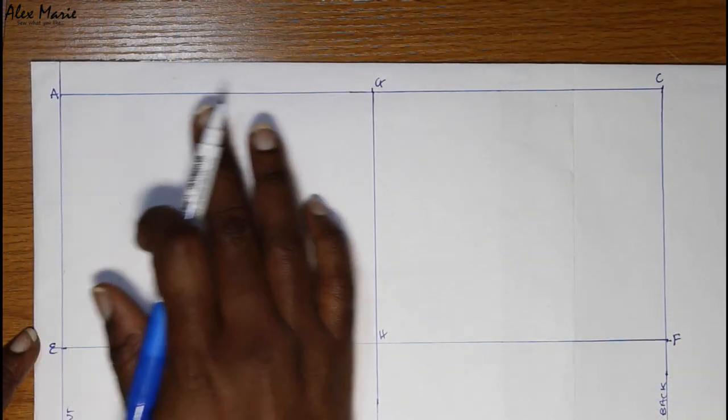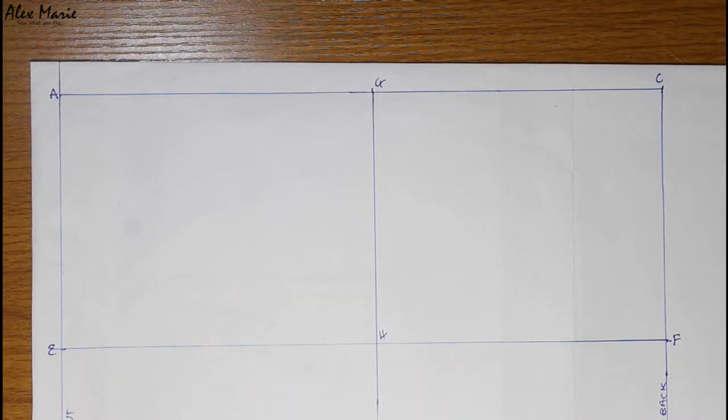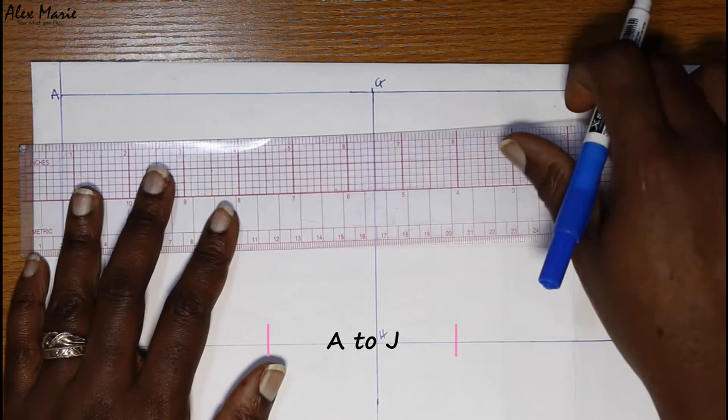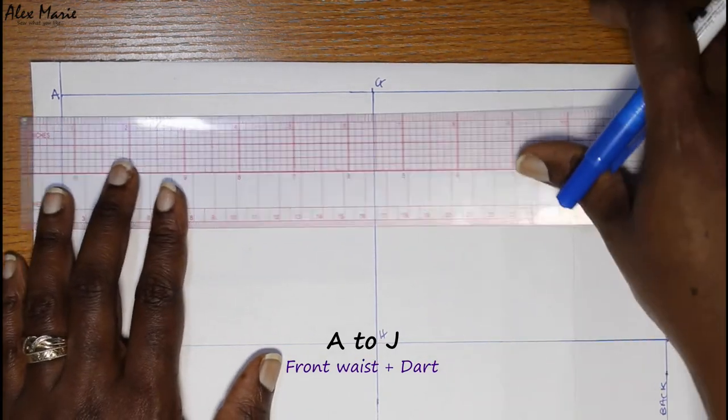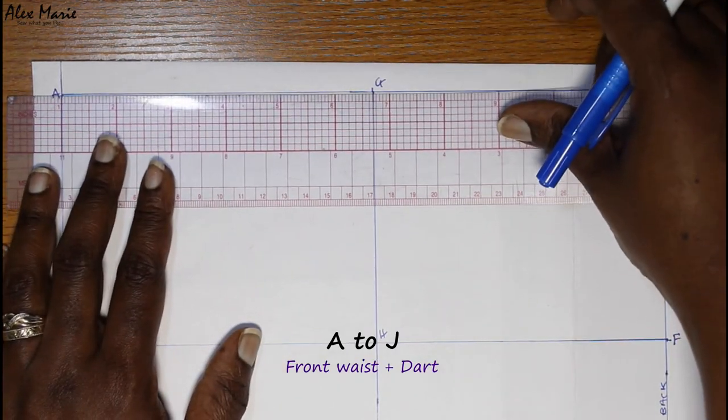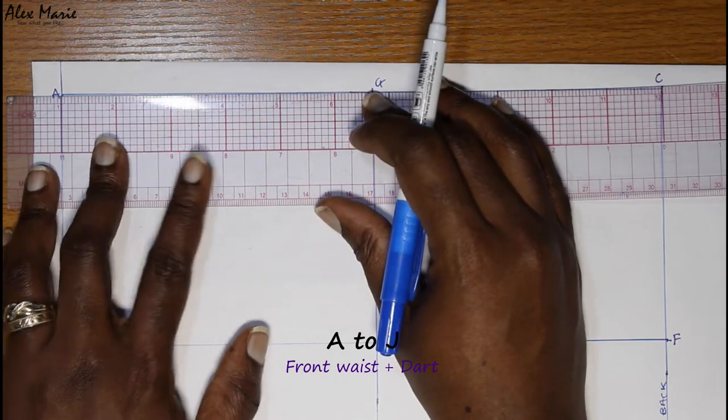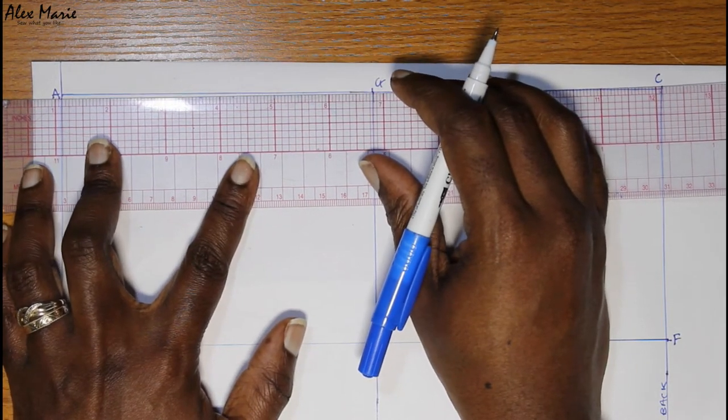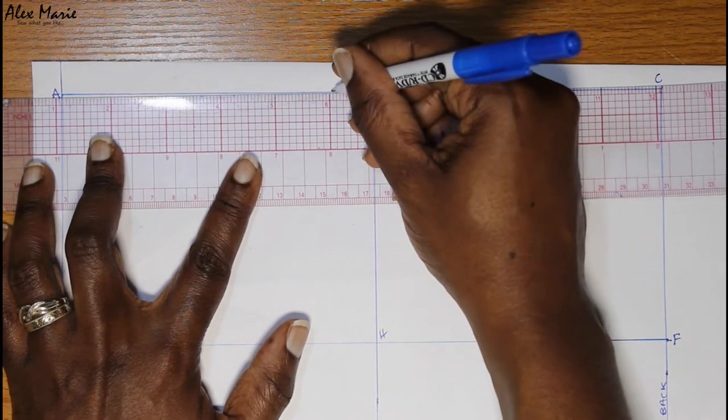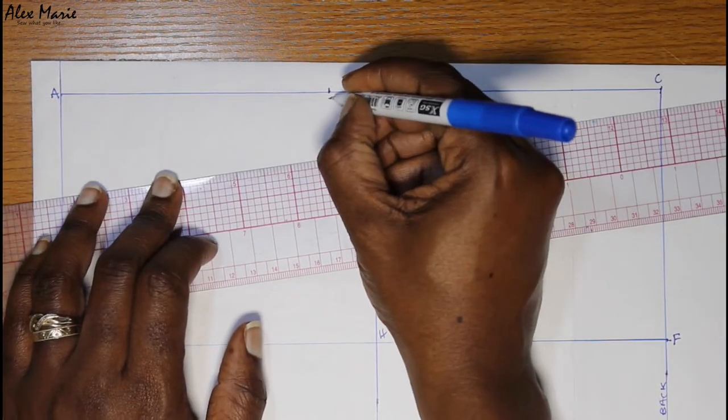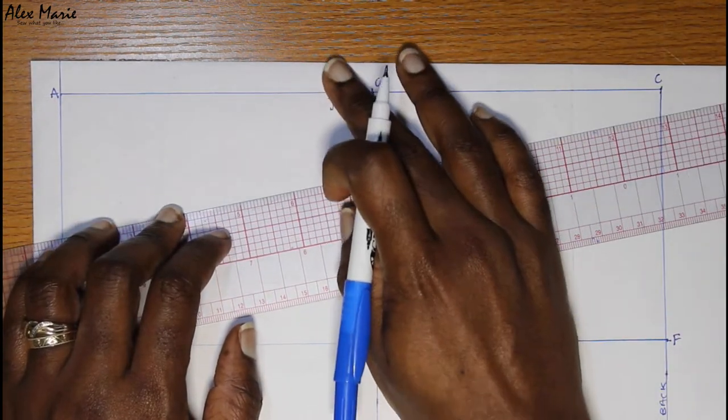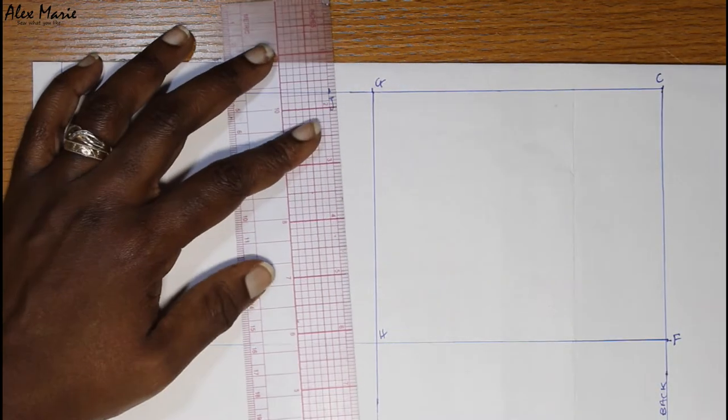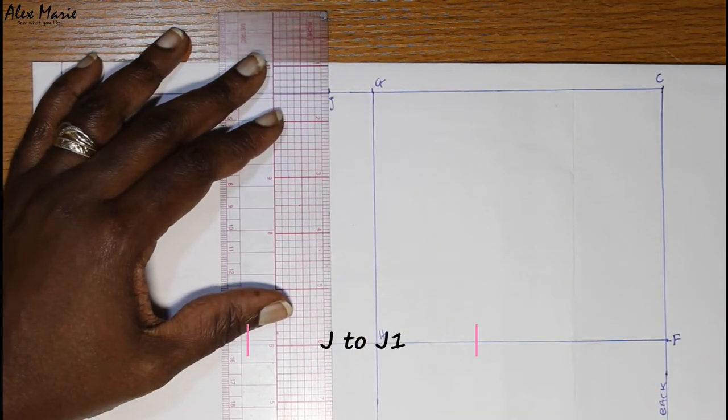Now for the darts, first we're going to start with the front. A to J is our front waist plus the dart measurement. She calculates it. Call this point J.